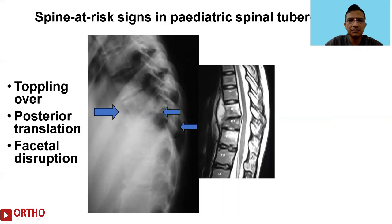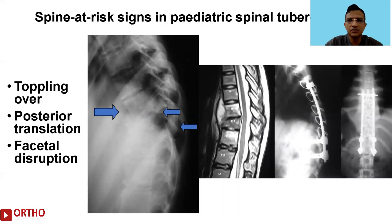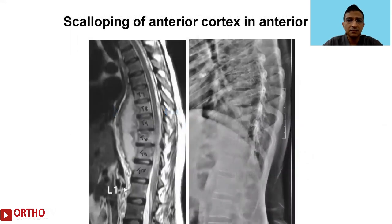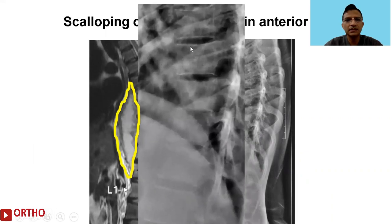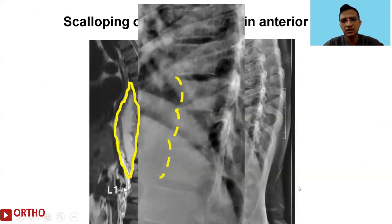Here is the MRI of this particular patient who had to be operated upon with a hybrid fixation as seen here. Sometimes we also see anterior tuberculosis with an anterior abscess that may present with scalloping of the anterior cortex. Zooming in on the lateral view, we can see scalloping of the anterior cortex due to erosion from the anterior abscess.